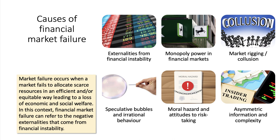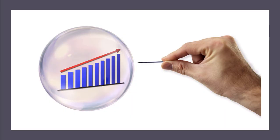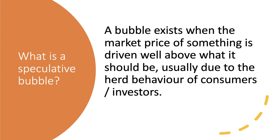In this video we're going to take a look at one of the main causes of financial market failure, namely speculative bubbles and irrational behavior. There are other causes and we have a separate video on each in our YouTube series. A-level specifications are looking for students to understand that speculation and market bubbles are an example of market failure, and perhaps stronger financial market regulation might be needed to address the consequences of this behavior.